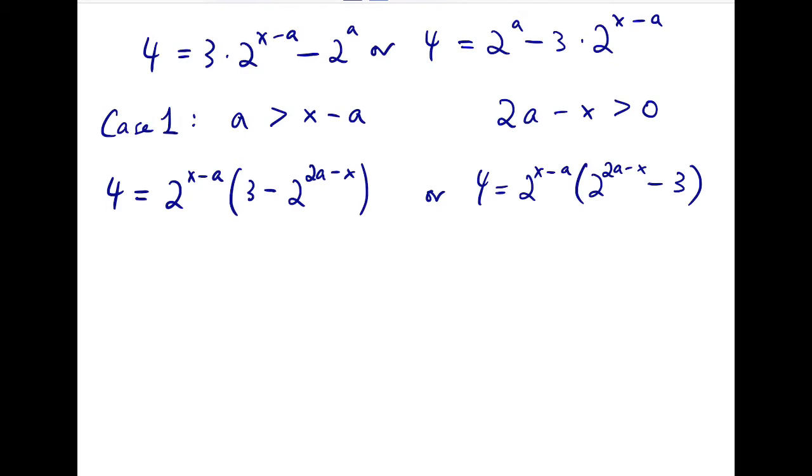So now because 2a minus x is positive, then 2 to the 2a minus x is always even. So 3 minus even, or the number minus 3, must be an odd number. And now we know that 4 is just a power of 2, it does not contain any odd prime factor, so 2 to the x minus a must be 4, and the other term must be 1.